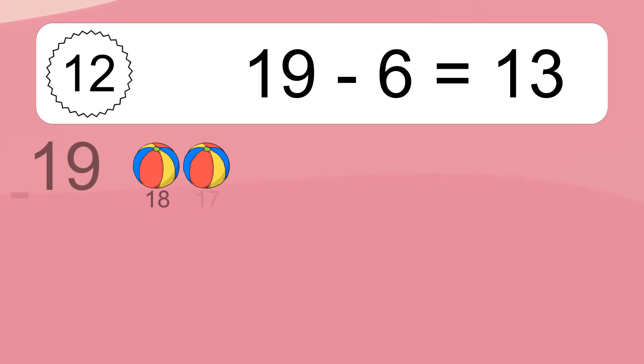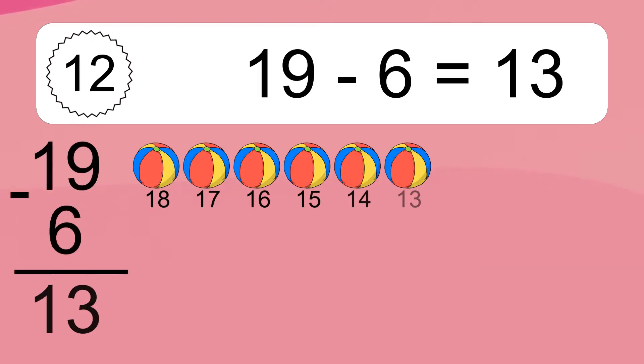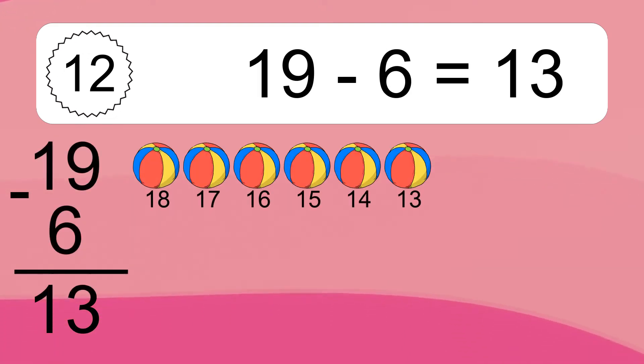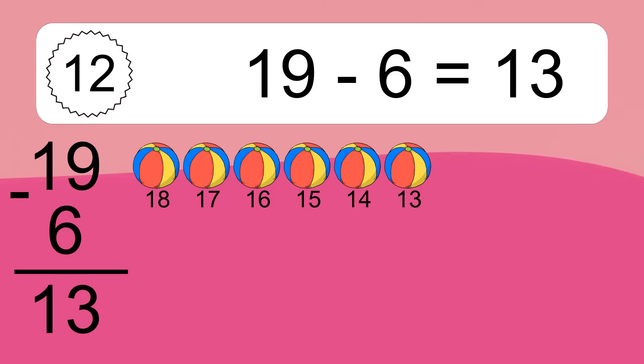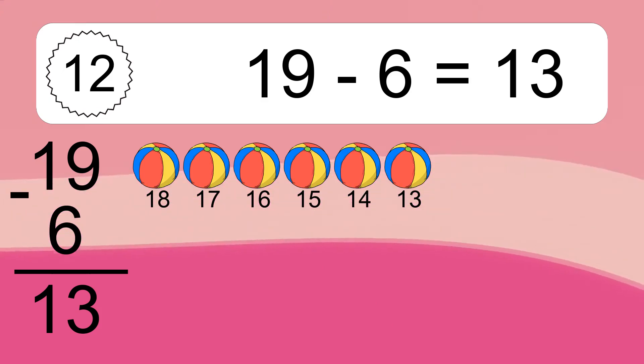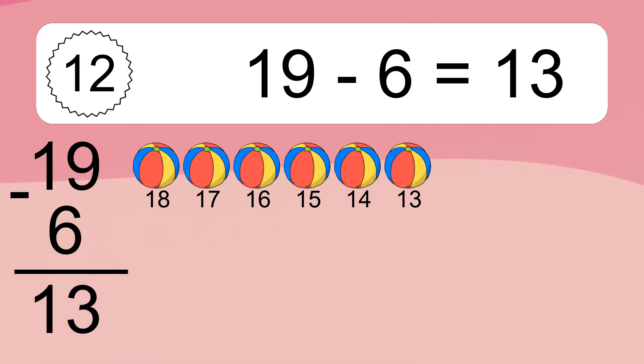19 minus 6 equals what? 19 minus 6 equals 13. Let's count it. 18, 17, 16, 15, 14, 13.